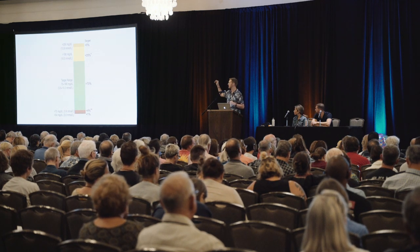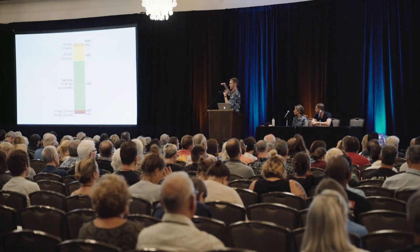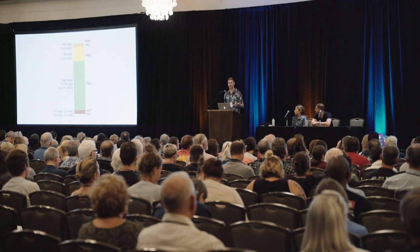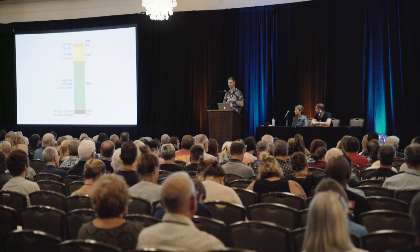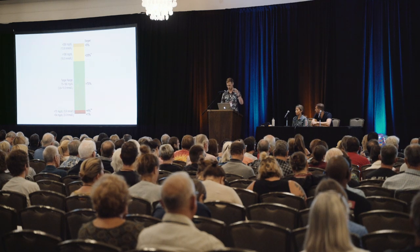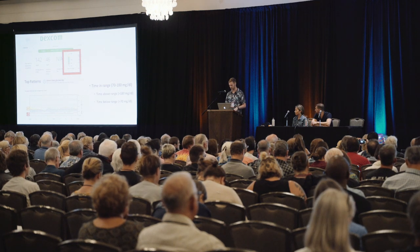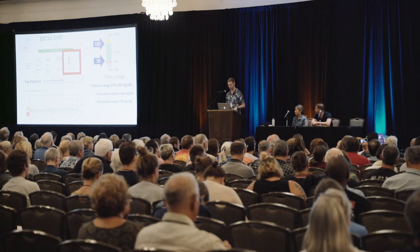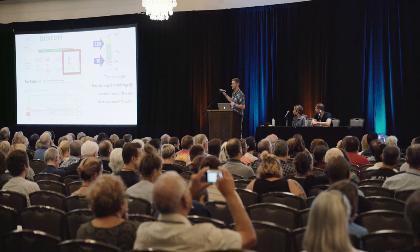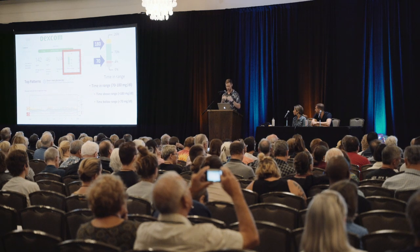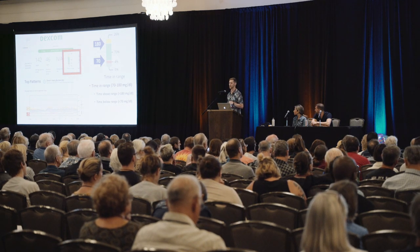What's left is the time above range in yellow — anything above 180 — with a section at the very top for higher highs above 250. As we increase time in range, we expect the time above range to shrink. Looking at Steve's numbers: he's right at 70% for time in range, 4% time below range, none in that very-low less-than-54 category, and 26% above range.